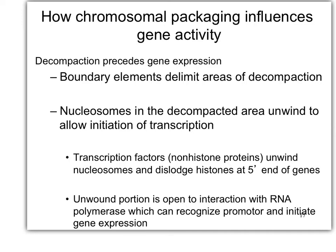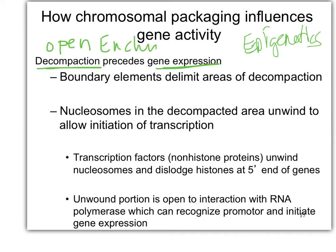We're going to continue talking about epigenetics. Epigenetics is the control of gene expression through other things aside from DNA sequence. So like heterochromatin and euchromatin. Heterochromatin is closed DNA, not accessible to transcription factors — so compacted. In order to get gene expression, we must decompact or open back to euchromatin.